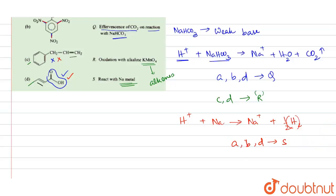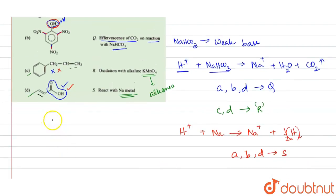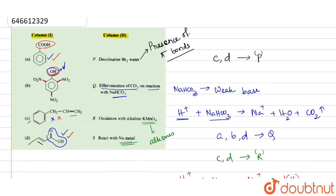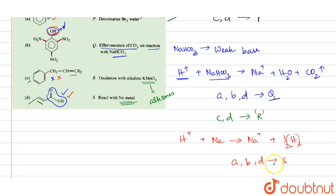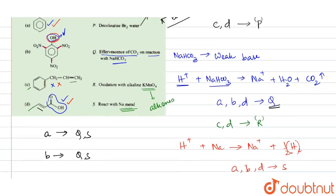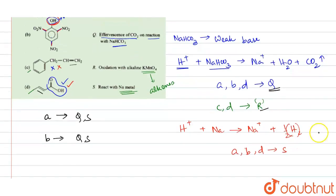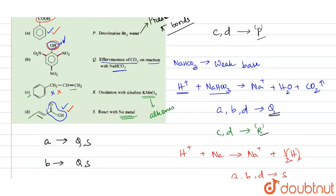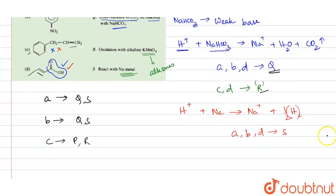To summarize the final matches: compound A is linked with Q and S; compound B is linked with Q and S; compound C is linked with P and R; and compound D is linked with all four — P, Q, R, and S.